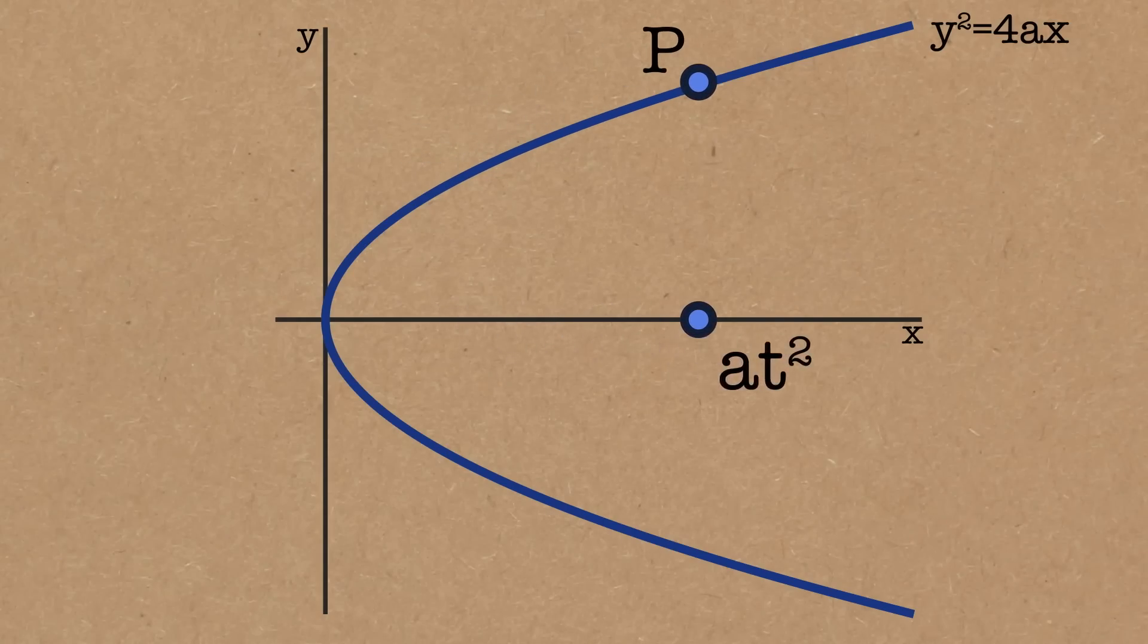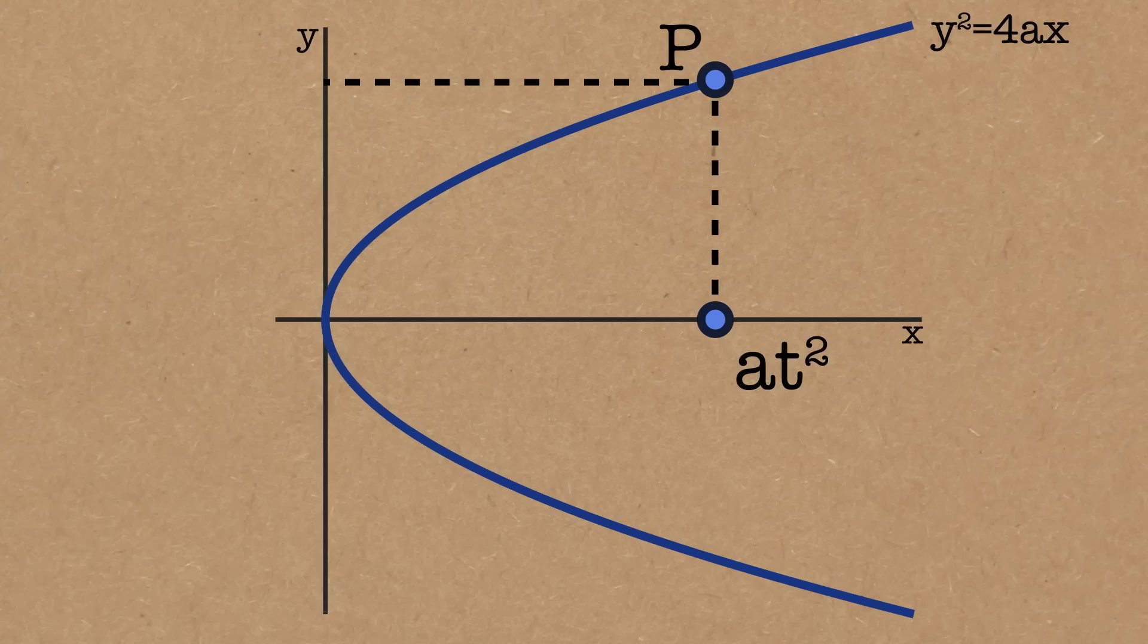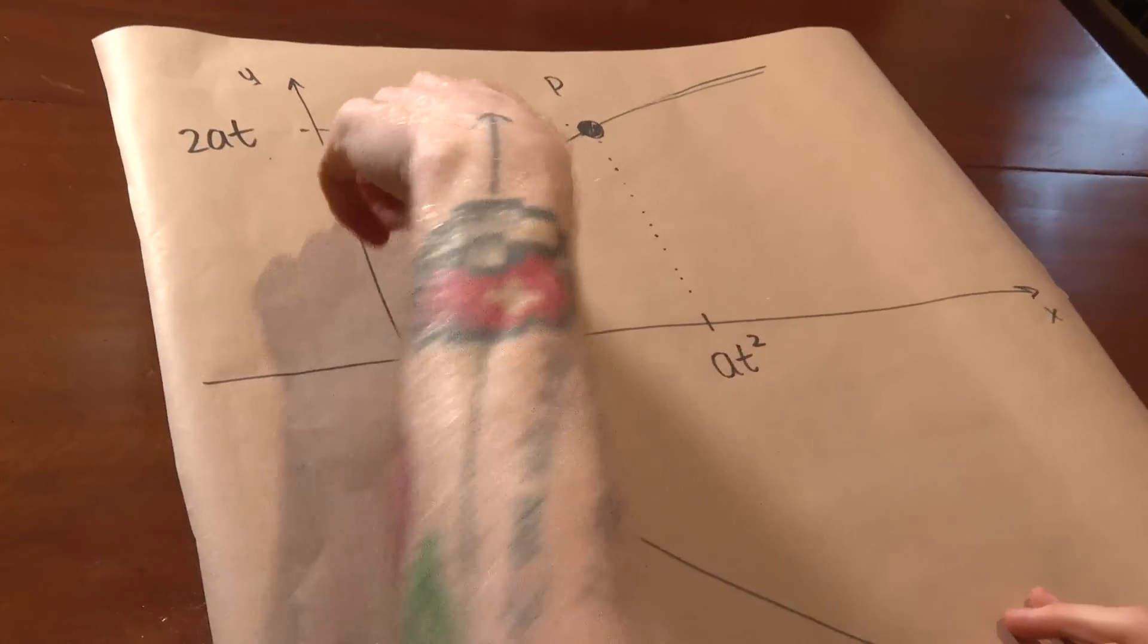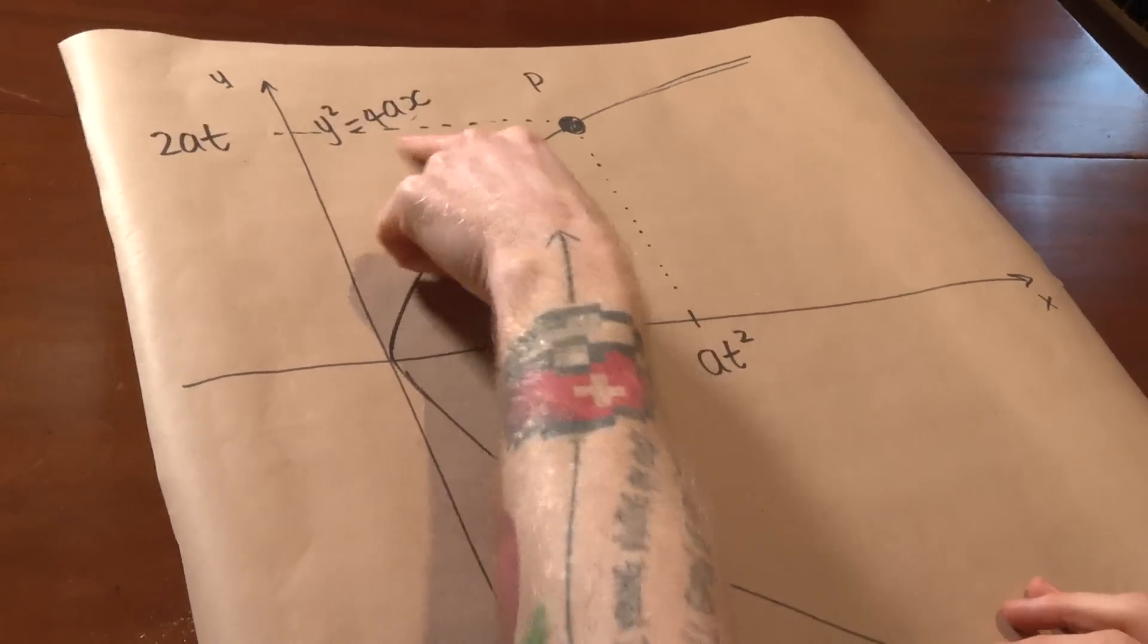Now if this is at x equals a t squared then we can work out the y value of this. So if y squared is 4ax then that's going to mean that y can be plus or minus 2at and there's going to be a minus 2at down here. We're going to focus on the plus point. So they're the two points on the parabola when x is this, satisfying that equation.